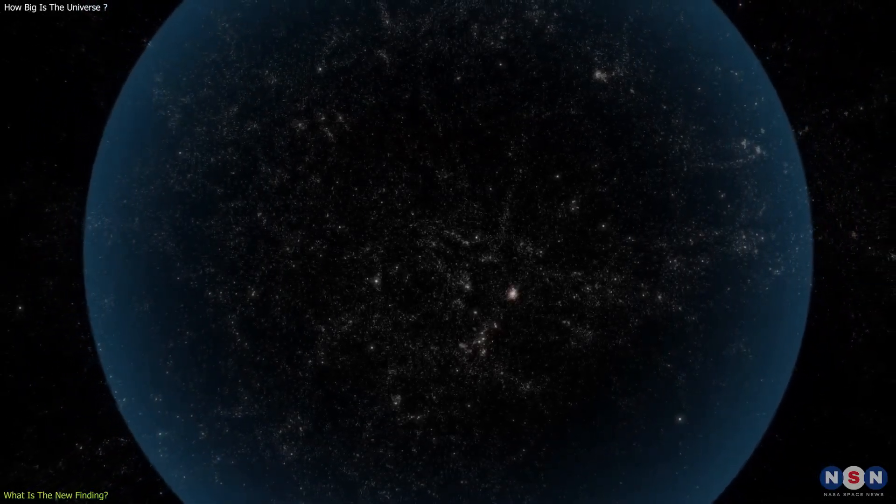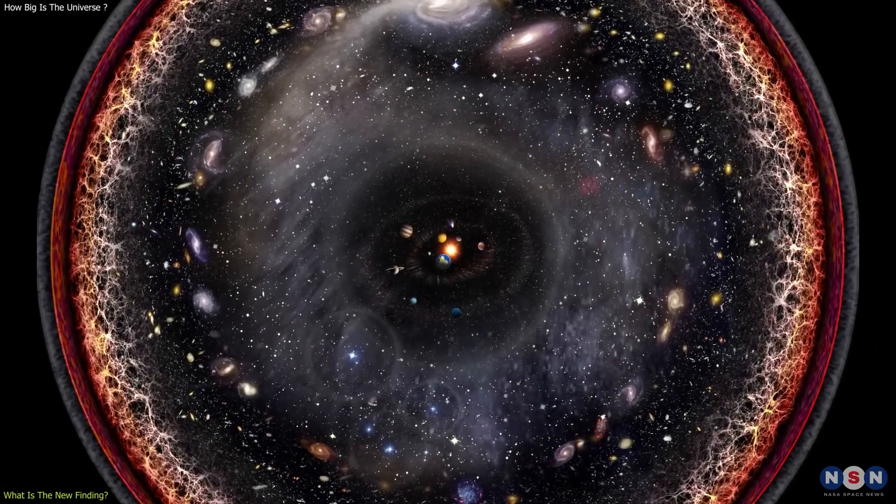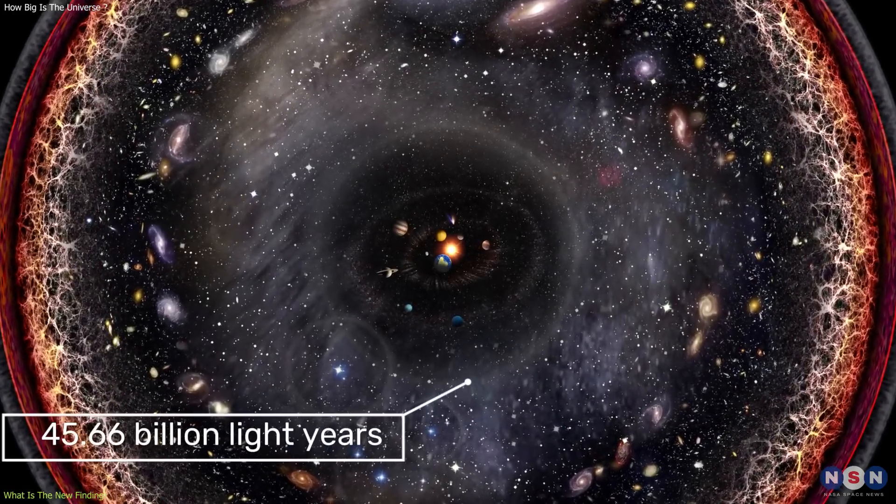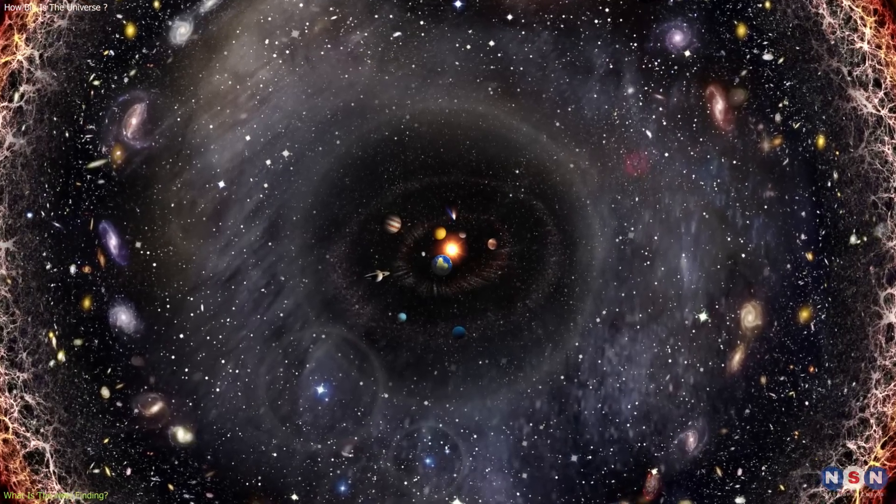What they found was that the observable universe is 0.7% smaller than the previous estimate. That means that the radius of the observable universe is about 45.66 billion light-years, instead of 46 billion light-years, as previously thought.